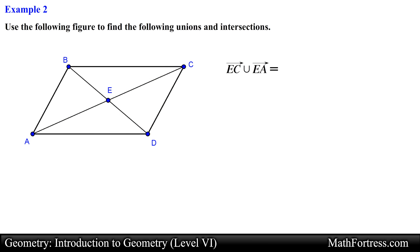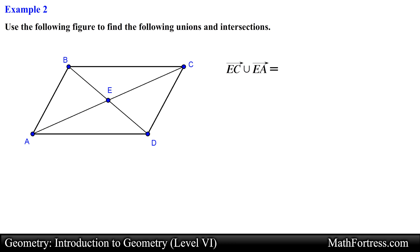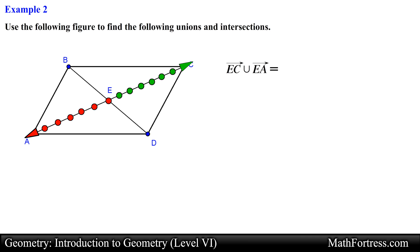In this problem they are asking us to find the union of ray EC and ray EA. Notice that the diagram does not contain any arrows; nevertheless we can either imagine or add the arrows when needed. Ray EC is the set of all points located here, even the points that extend infinitely in this direction. In the same manner, the set of all points of ray EA are located here, again even the points that extend infinitely in this direction. Since we are asked to find the union, we essentially want to unite or merge all the points from both rays into a new set.